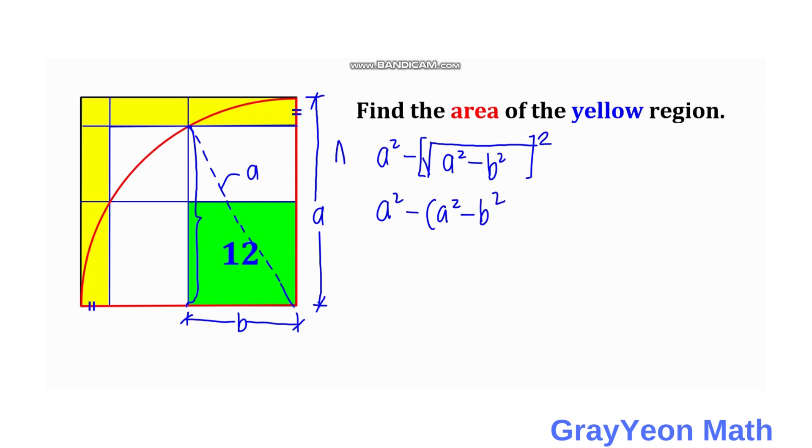So area of the yellow is equal to A squared minus A squared plus B squared. So area of the yellow is equal to B squared.